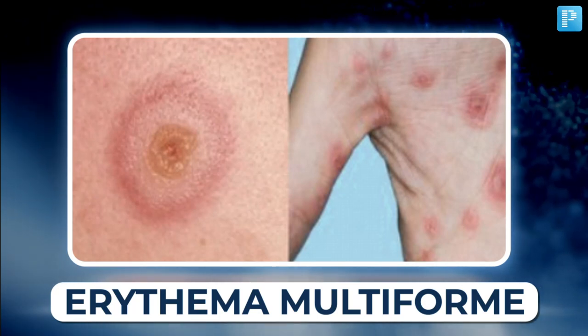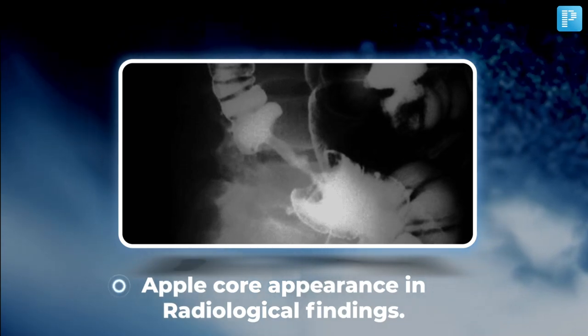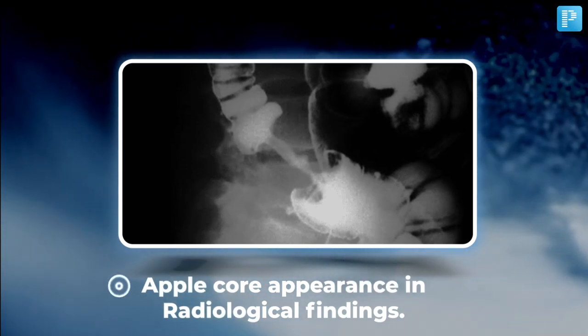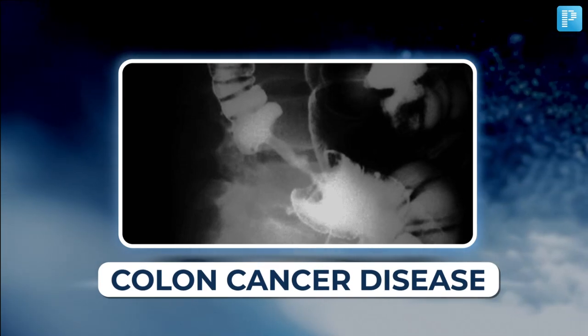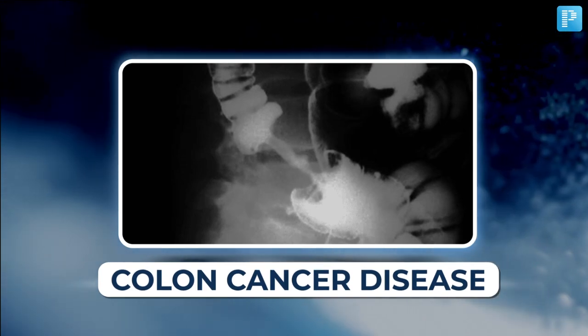Now let's explore image number 3. It exhibits an apple core appearance in radiological findings. What does this indicate? You got it — it's colon cancer. Excellent work. How are you doing so far?